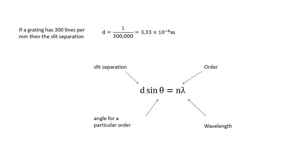So if 300 lines per meter, so 1 over 300,000, which is 3.33 times 10 to the minus 6 meters. You will be asked to do that little calculation to work out the slit separation.